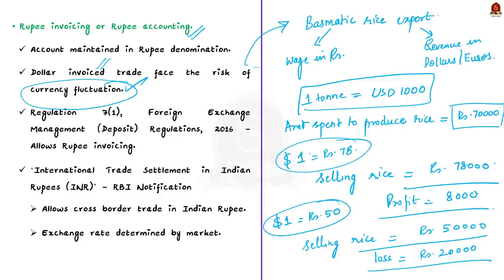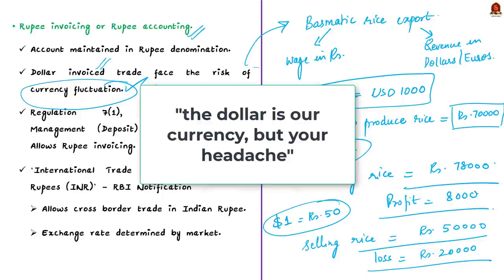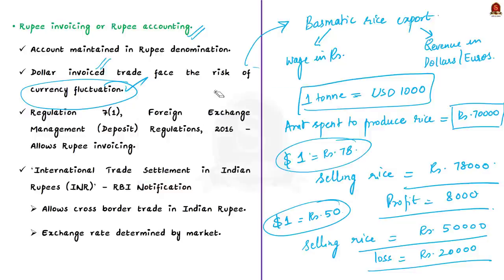Here I have to quote a statement made by the US Treasury Secretary: 'The dollar is our currency but your headache.' So to get away from this headache, India is planning to move towards rupee invoicing. The present scenario is that invoicing in rupee is already legal under Regulation 7(1) of Foreign Exchange Management Deposit Regulations 2016. Additionally, to give a boost to rupee invoicing, the RBI in a recent circular also allowed cross-border trade in Indian currency. Under this arrangement, RBI lays out rules allowing Indian exports and imports to be denominated and invoiced in Indian rupee using market-determined bilateral exchange rates.